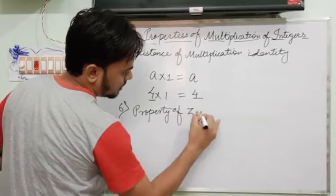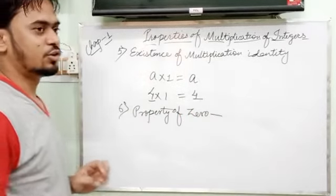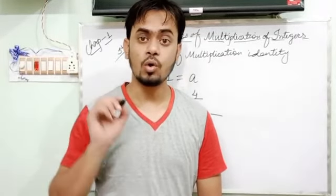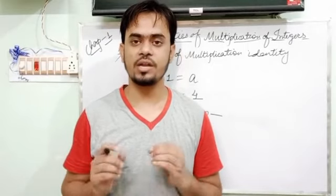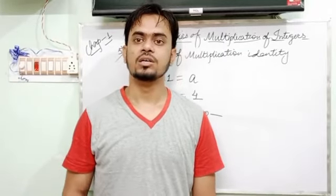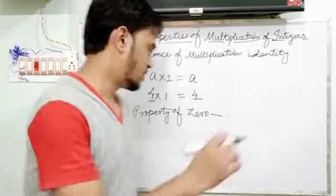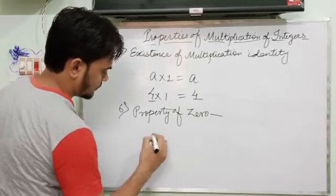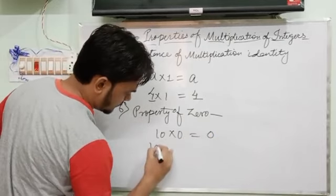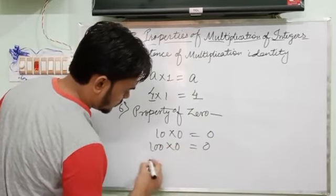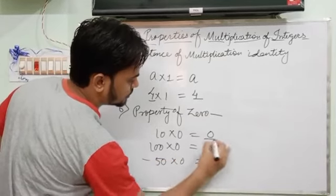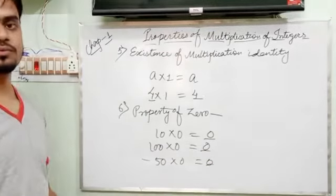The sixth and last property is the property of zero. We know that if you multiply any integer by zero, the result will also be zero — whether the integer is negative, positive, or any value. For example, ten into zero equals zero, and minus fifty into zero equals zero. This is called the property of zero.